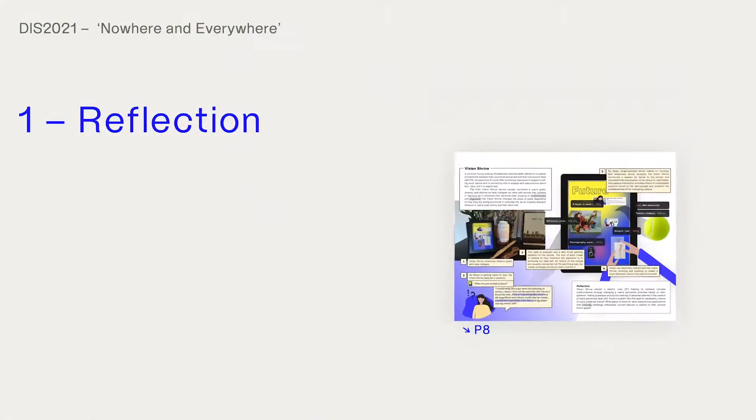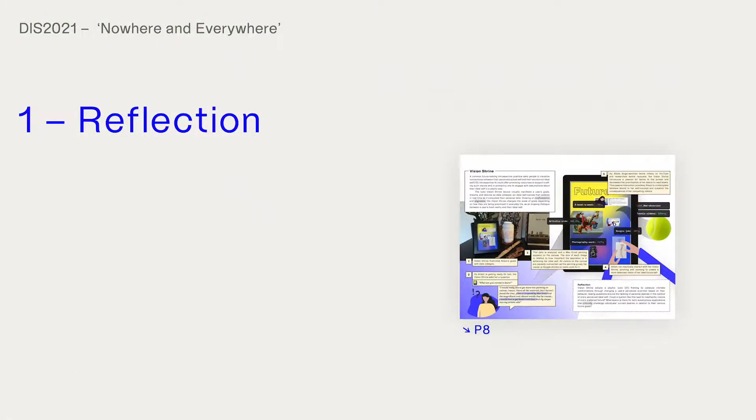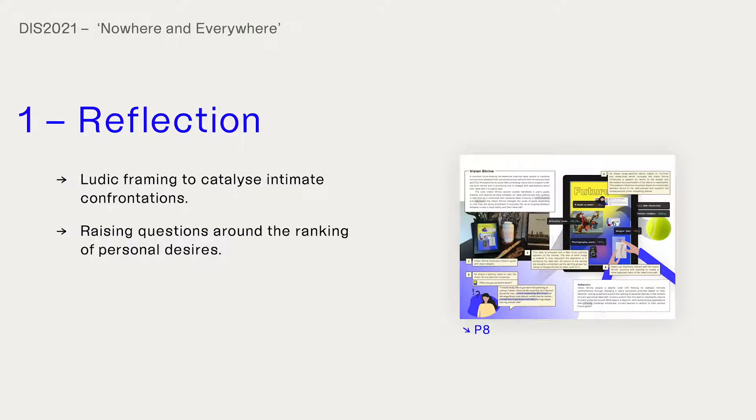So, this proposal explores how we could use ludic framing to catalyze intimate confrontations. It raises questions around the ranking of personal desires in the context of one's perceived ideal self and asks, could a system like this lead to inauthentic visions of one's preferred future?